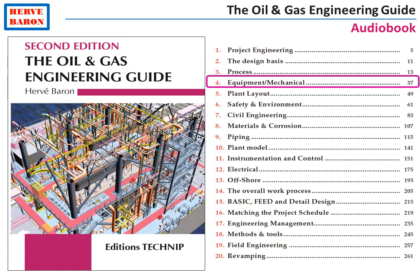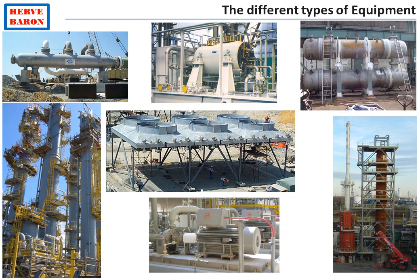The equipment discipline is sometimes called the machinery discipline. It is split into different specialties, as specialists are required for the different types of plant equipment. Equipment are grouped in four categories: static equipment, which are pressure vessels and heat exchangers; rotating equipment, which are pumps, compressors, and turbines.